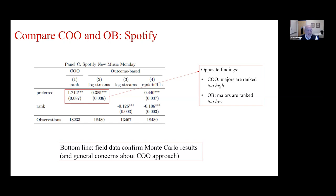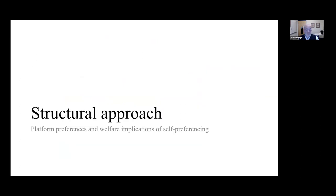The bottom line from the field data is that it provides some evidence for the Monte Carlo concerns: there are contexts in which conditioning on observables might give you the wrong answer. But there's no point criticizing something unless you have an alternative, and you only have an alternative if you have quantity data. It's not a hopeless approach — we want to understand when it's best applied and when it's best justified.